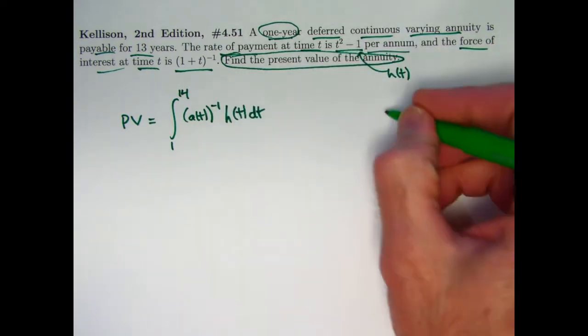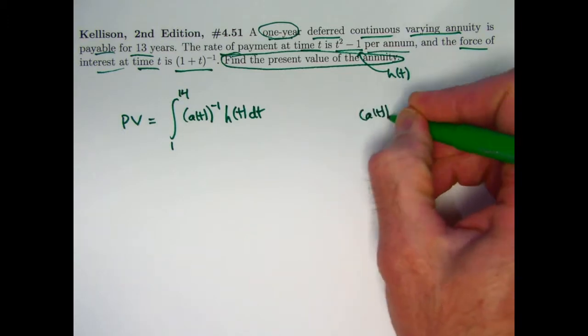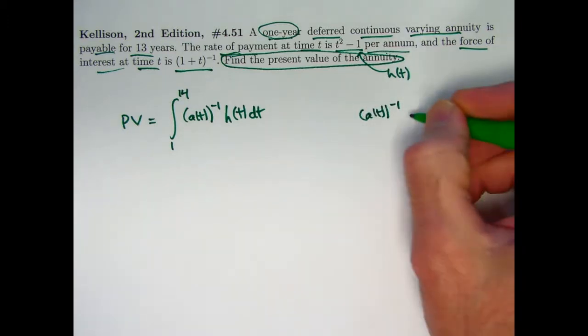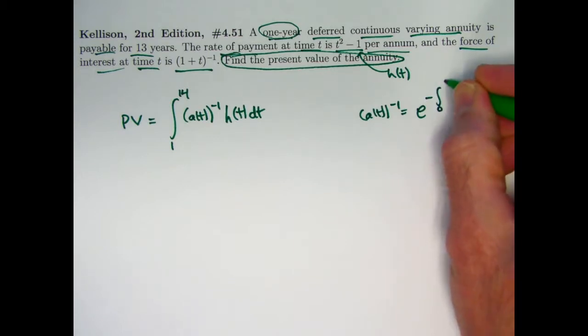h of t being this, what is the a of t to the negative 1 going to be? The reciprocal of the accumulation function. For a non-constant force of interest in general it's going to be e to the negative of the integral from 0 to t of the force of interest function. Let me make its variable something else like tau.